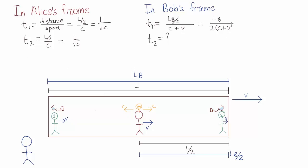For t2, they approach each other at a speed c minus v, because the friend is moving away from the light.